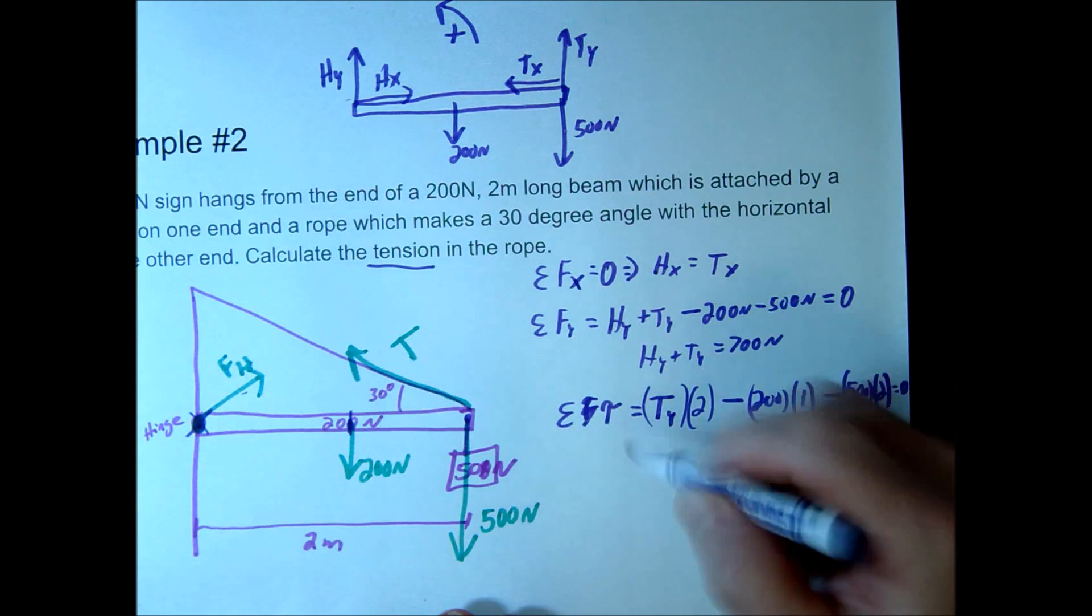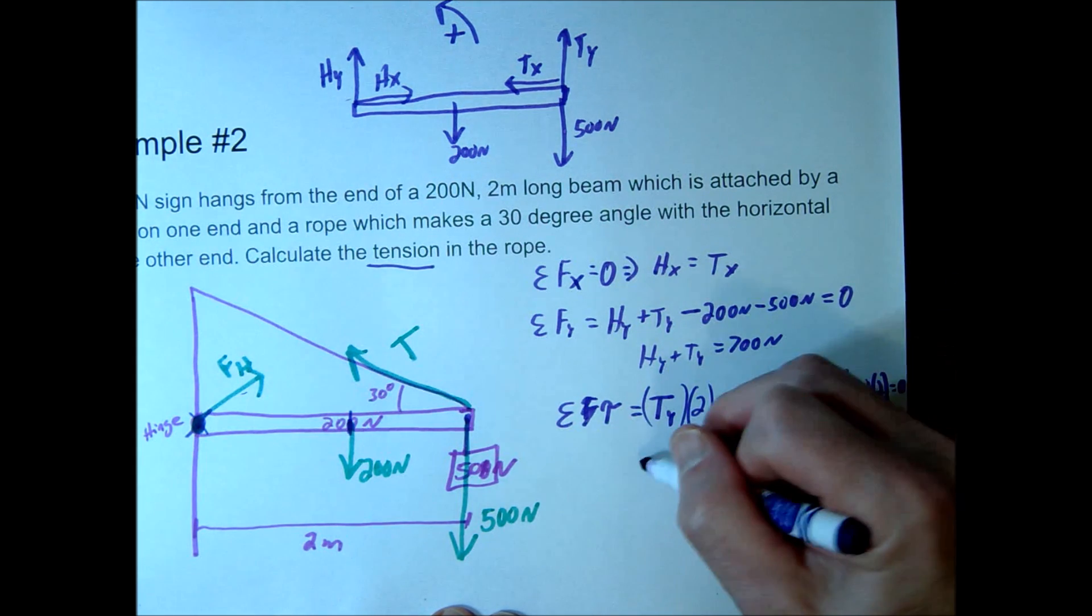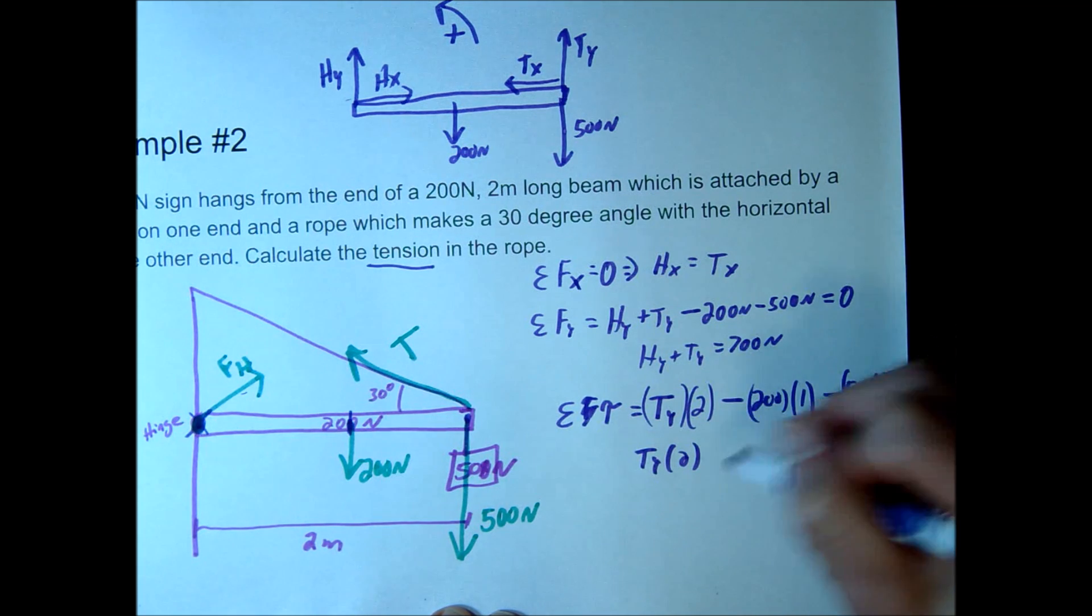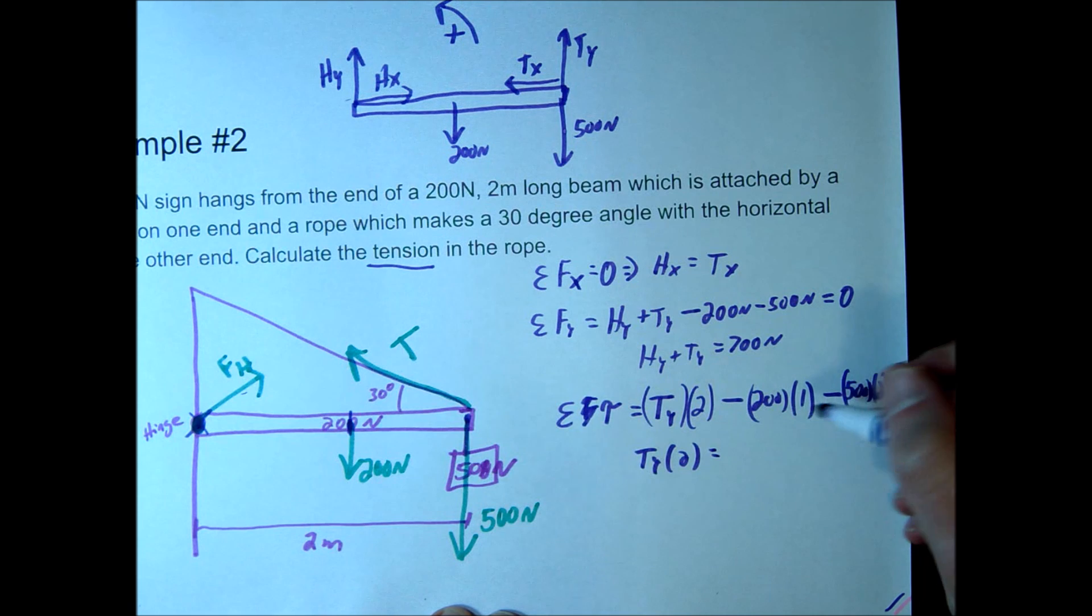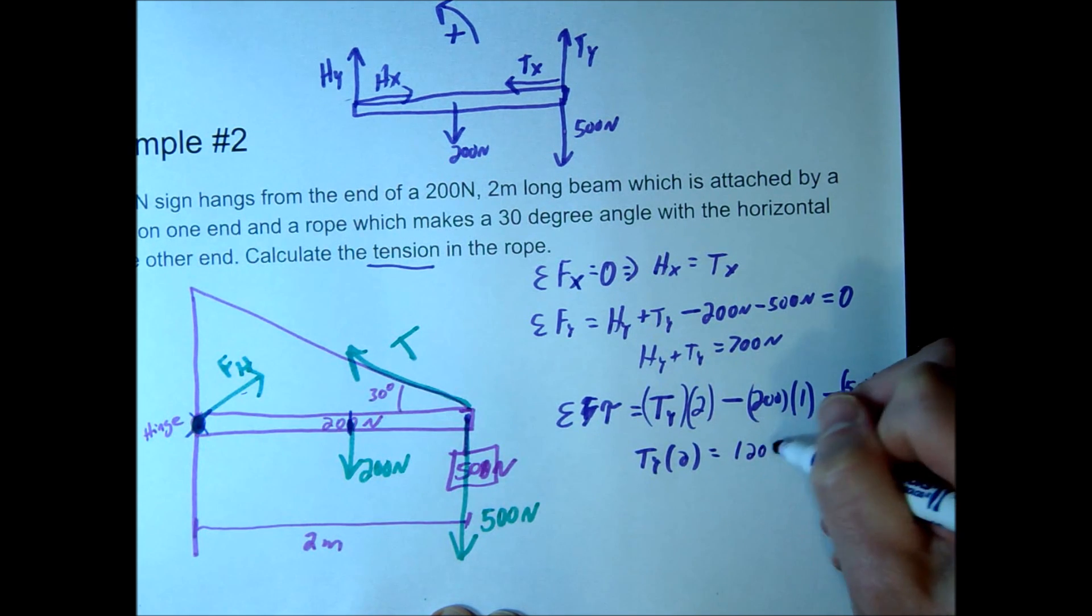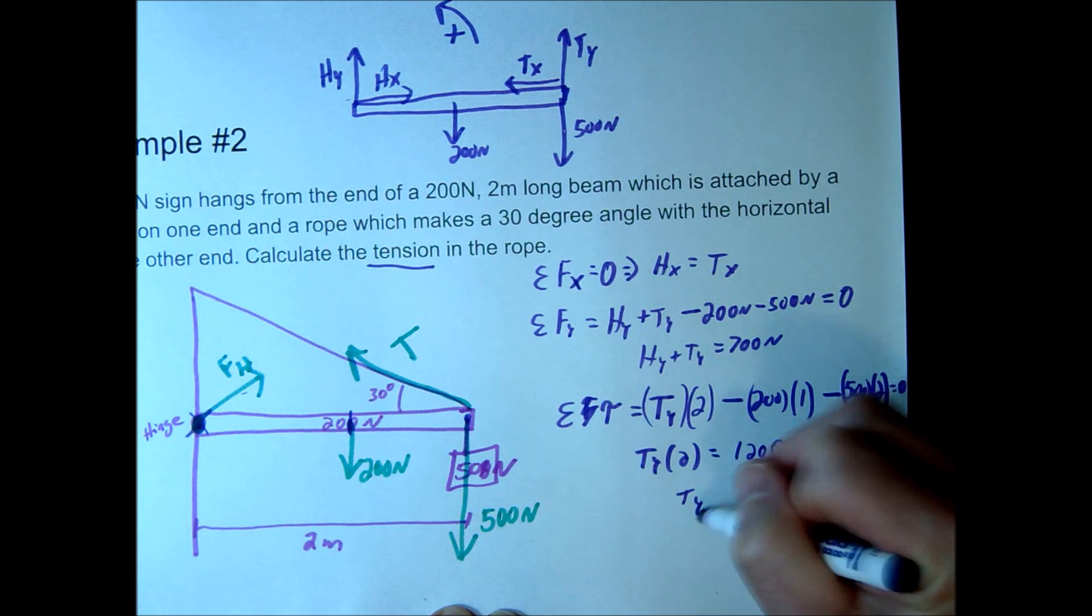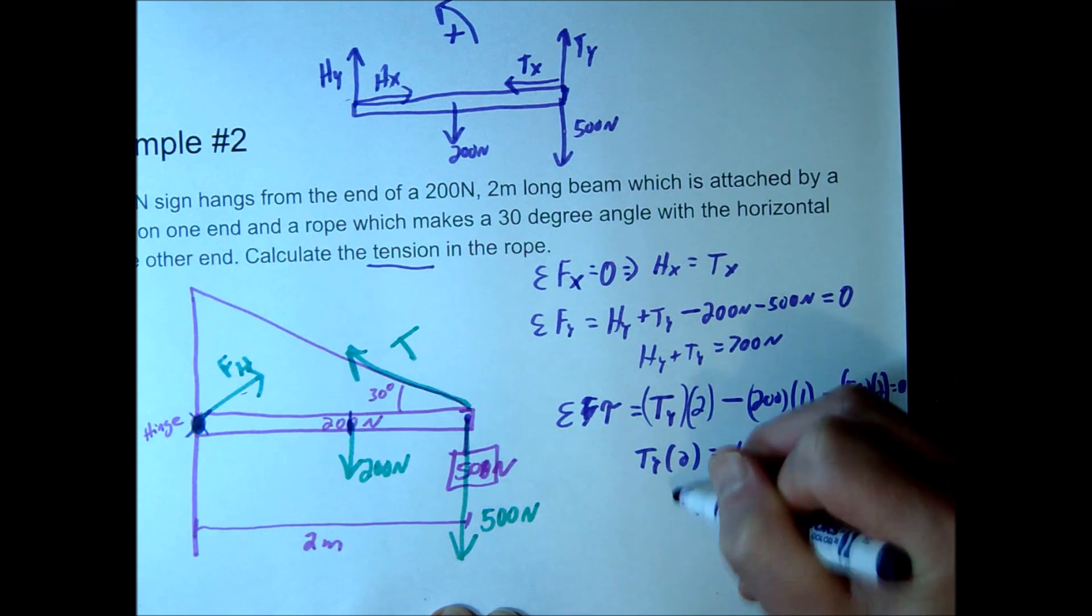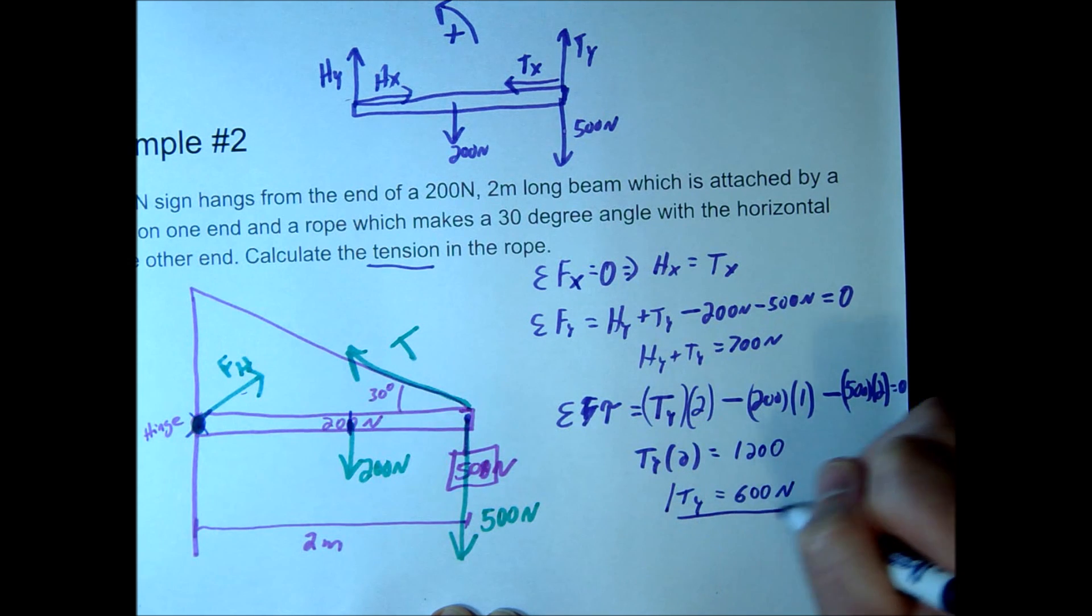Okay, so notice right away we can go ahead and solve for our ty. So we have ty times 2 should equal 200 times 1 minus 500 times 2, so that's going to equal 1,200. So that gives us a ty equal to 600 newtons. Okay, that's not our answer, that's our ty value.